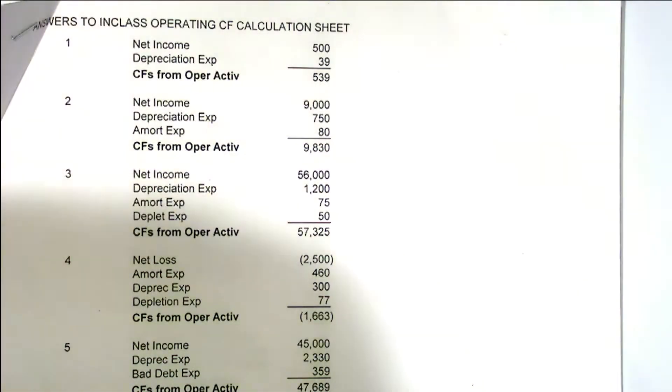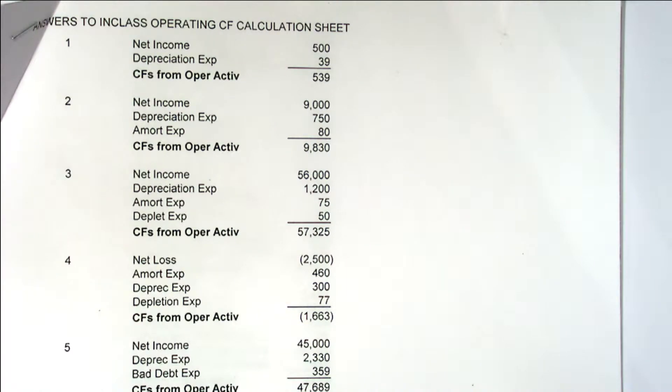Now if you look at those we are just adding back non-cash expenses right? So on number three do we add back rent expense? No because it is not a non-cash expense. Same thing with advertising expense in number four. Now number four is a net loss so our top number is a negative one right?